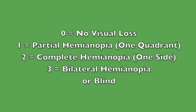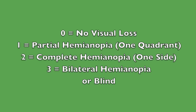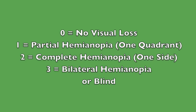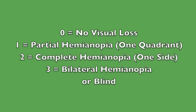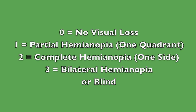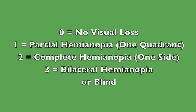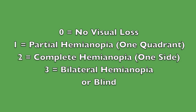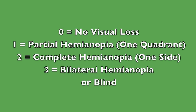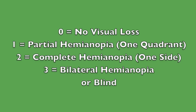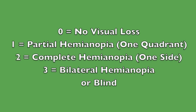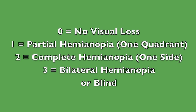To review, here are the levels as shown in the doc flow sheet. If there is a deficit in one quadrant, this is a partial hemianopia and scored one. If there is a complete hemianopia, lack of response on one side, this is a two. If there is no response in any quadrant, this is scored a three.